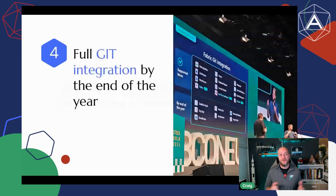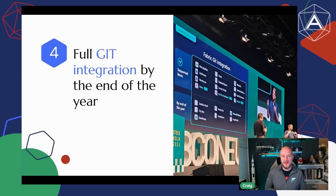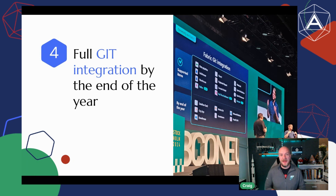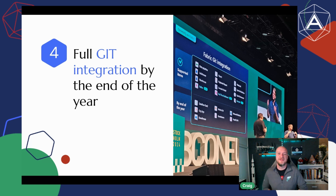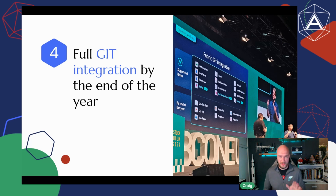Next up is full Git integration by the end of the year. There were a few additional pieces announced as part of the real-time intelligence experience. I'm super excited about this one, but kind of wish it was already there — it's hard enough driving adoption of good source control practices. Now that Microsoft have committed to it, the rest will be there by the end of the year. That's this year, right?